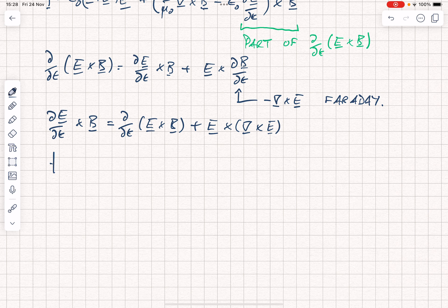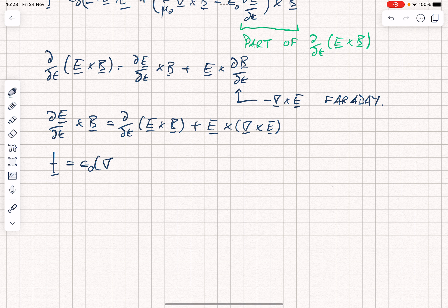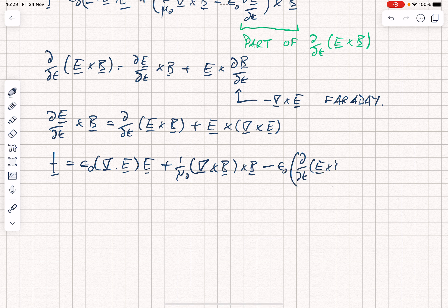And when we substitute in, we see the following. Now here's little f, which is equal to epsilon 0 div E times E minus epsilon 0 into d by dt of E cross B plus E crossed with curl E. And notice how I'm being careful with the cross products in that final bracket.